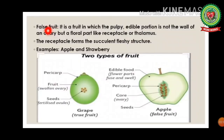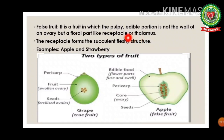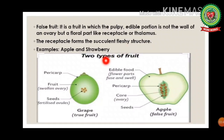A false fruit is a fruit in which the pulpy edible portion is not the wall of the ovary but a floral part like the receptacle or thalamus. The receptacle is a swollen cup-shaped structure present above the peduncle. It forms the succulent fleshy structure. The best examples of false fruit are apple and strawberry.